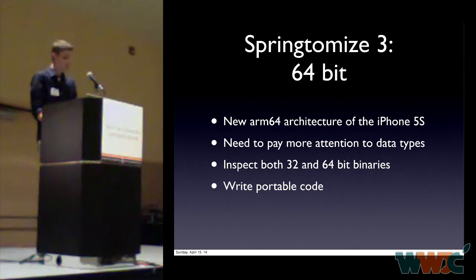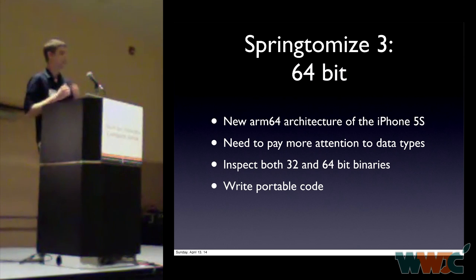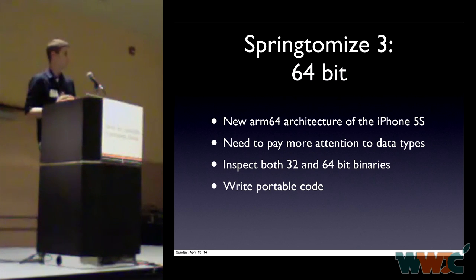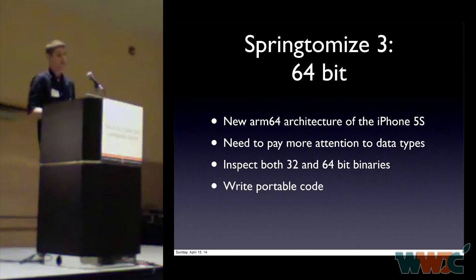Other challenges I had to face with Sprintomize 3 were the new ARM64 architecture of the iPhone 5S, which forced me and other tweak developers to pay more attention to different data types. You now need to look at both 32-bit and 64-bit code to determine which kind of data you are modifying, because thinking about the wrong data type — which has a different width in bits on different systems — can cause hard-to-solve bugs. You need to inspect both 32 and 64-bit binaries to write portable code that works on both.